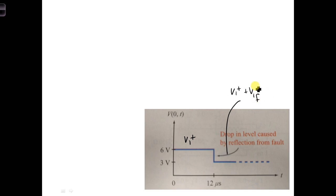So I'll say V1F minus, and that's propagated all the way back to the generator. So then at the moment it reaches the generator, we'll get V2F+. V1F minus is the first reflection from the fault, and the F indicates that it is the reflection from the fault. The 1 indicates that it's the first reflection from the fault.